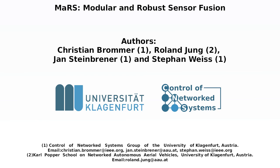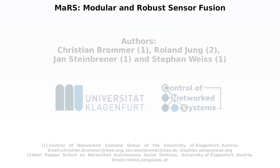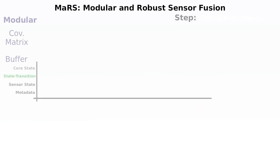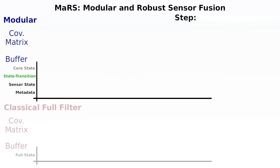This is a short animation to explain the filtering process of the presented modular and robust framework compared to the classical approach. The upper segment shows the current process and buffer access for the modular version, and the segment on the bottom shows the same steps for the classical approach.